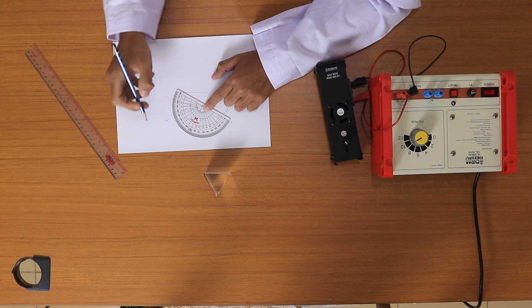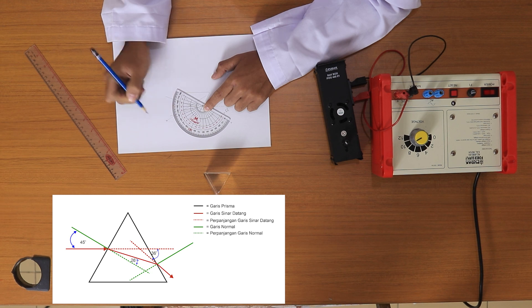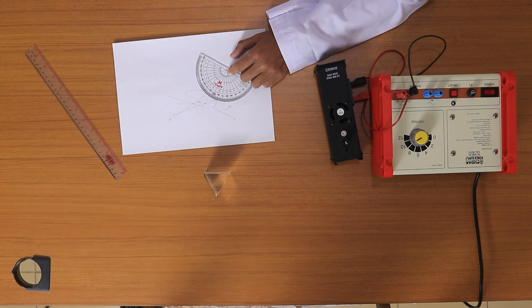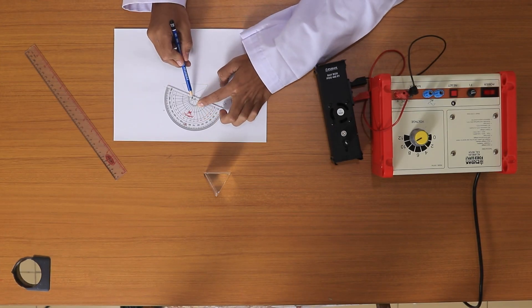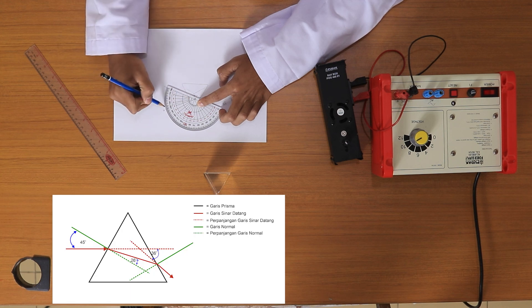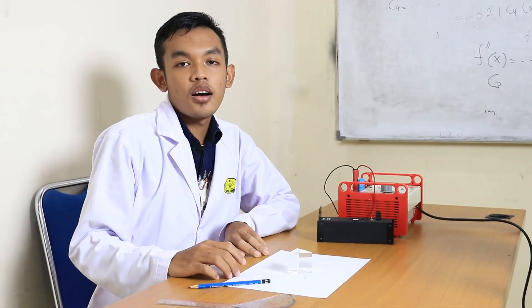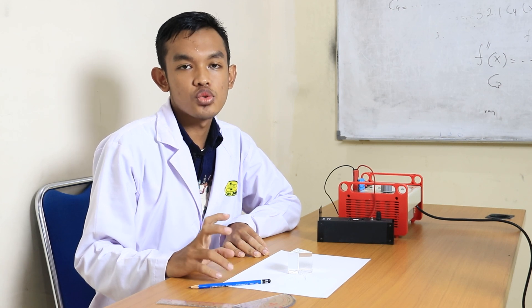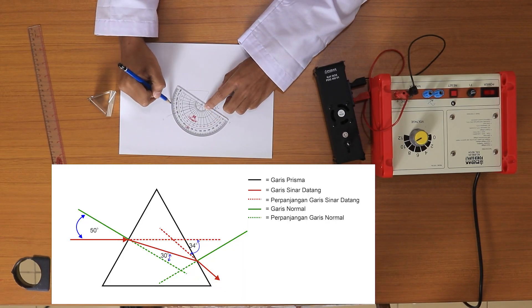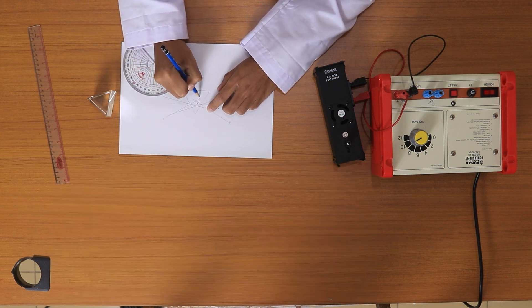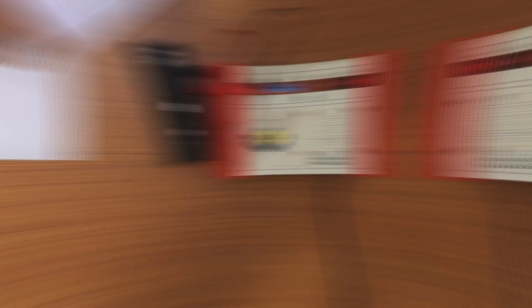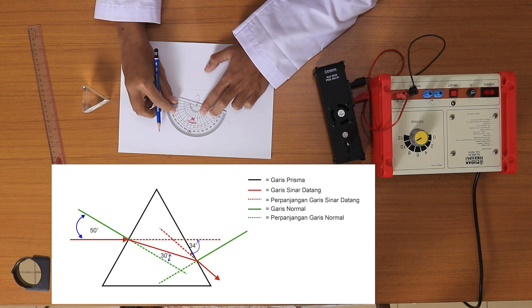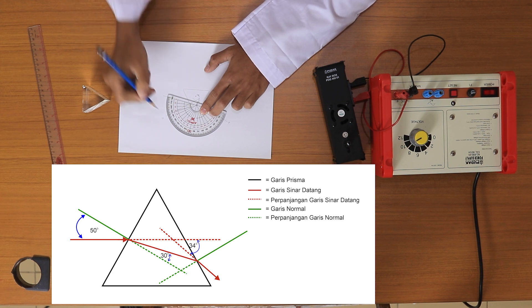Oke, tadi kita menggunakan sudut datang 40 derajat, sekarang kita ubah sudut datangnya menjadi 45 derajat. Dapat dilihat pada busur besarnya sudut bias adalah 26 derajat. Selanjutnya kita ukur besarnya sudut deviasi. Dari busur dapat kita lihat besarnya sudut deviasi adalah 36 derajat. Kita ubah kembali besarnya sudut datang, sekarang kita menggunakan sudut datang sebesar 50 derajat. Dapat dilihat besarnya sudut bias adalah 30 derajat. Selanjutnya kita ukur besarnya sudut deviasi. Besarnya sudut deviasi yaitu 34 derajat.